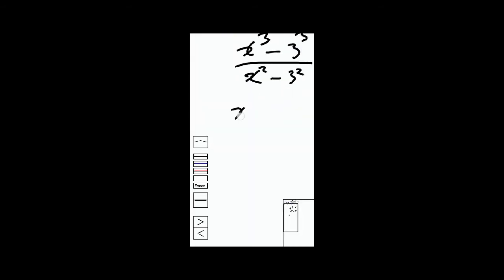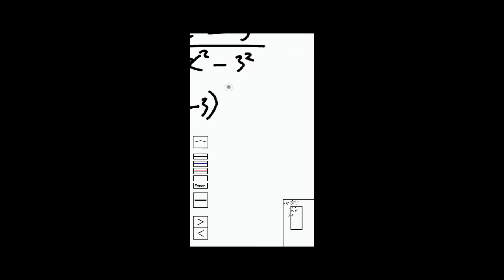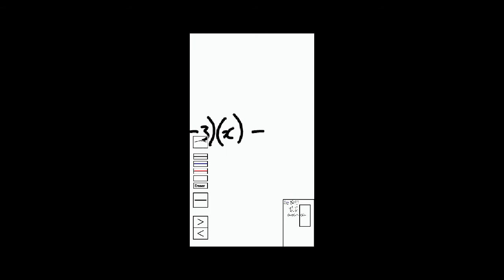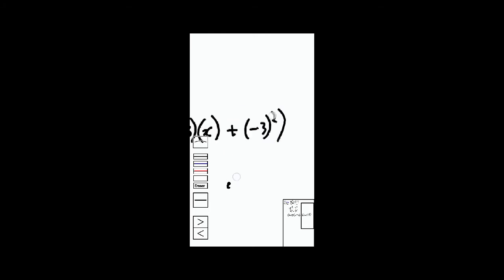From here we can do a difference of cubes, and we're going to have (x minus 3) open bracket, x squared minus negative 3 times x plus negative 3 squared, close bracket.